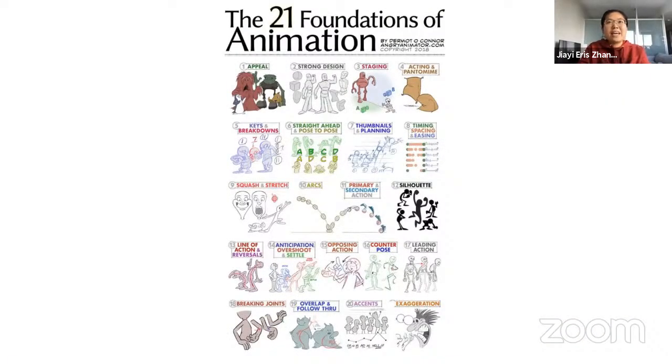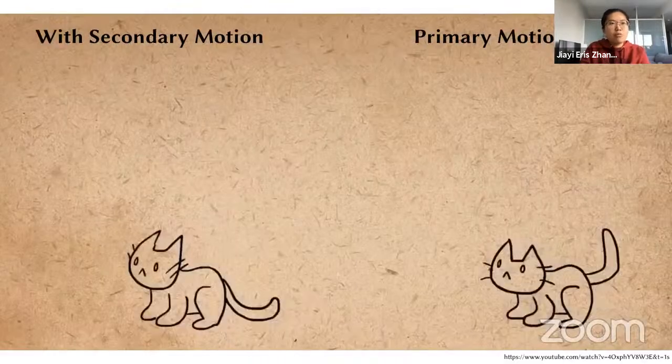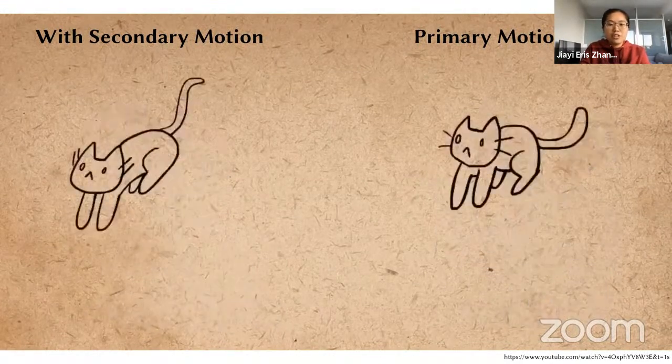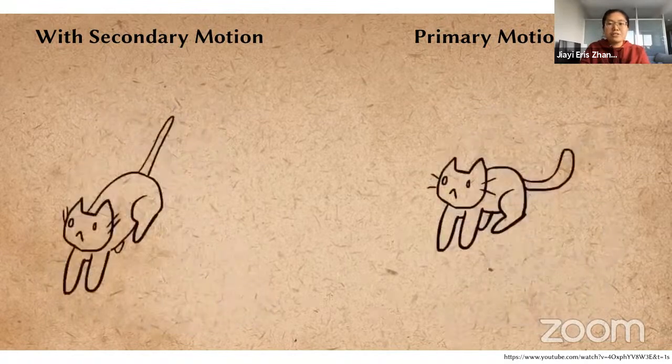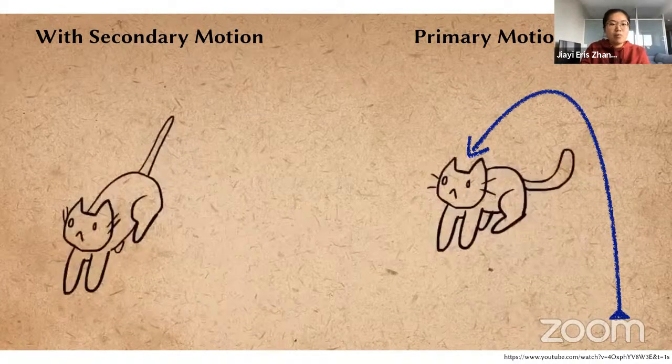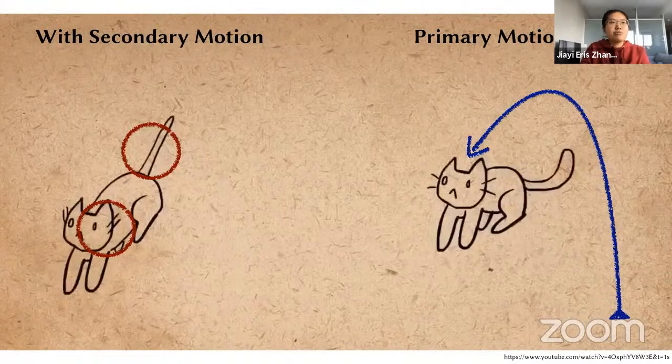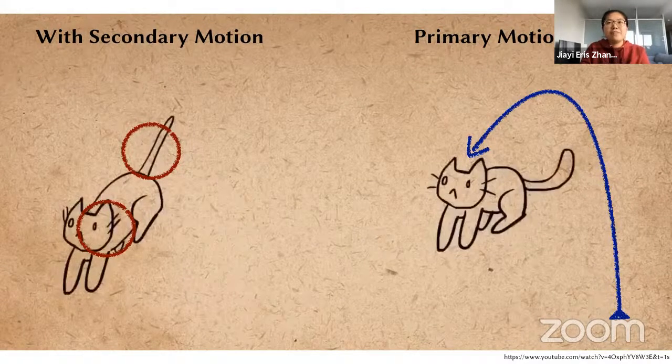When it comes to realistic character animation, there has been this so-called foundation of animation or principles of animation. Specifically in this work, we are focusing on identifying the relationship between primary and secondary motion. If you pay attention to these two simple animations, you will notice that the primary motion is actually clearly defined as this calf jumping motion. While secondary motion means the natural follow-through of the calf's whiskers as well as the tail. But now the question really becomes how do we actually achieve this effectively?